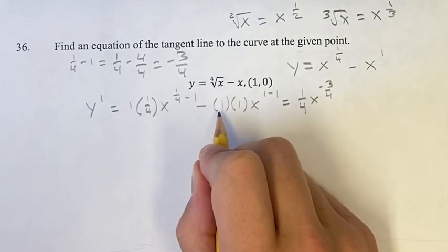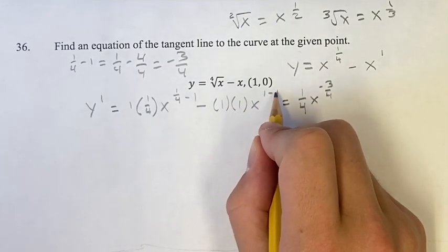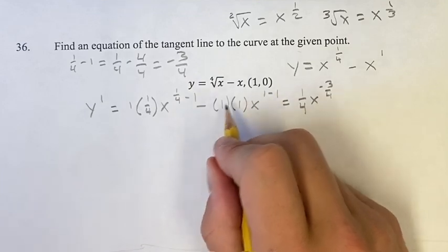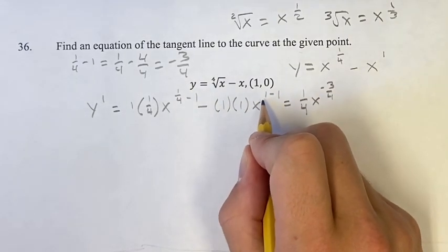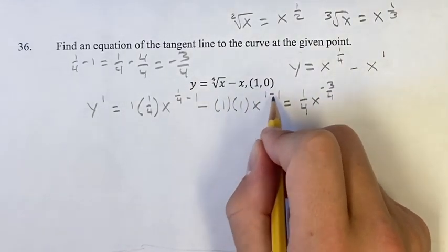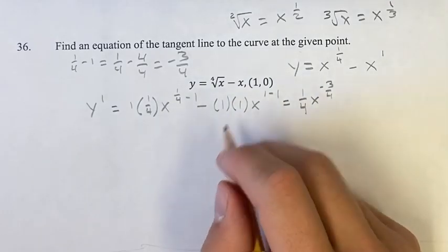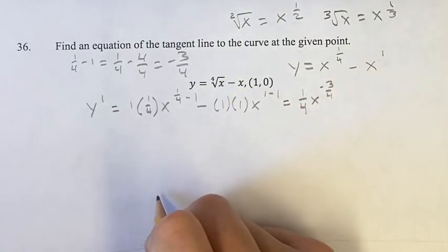Minus. One times one is one. And then x to the one minus one is x to the zero. This is minus one x to the zero. x to the zero is just one. Anything to the zero is just one. So this is just minus one.